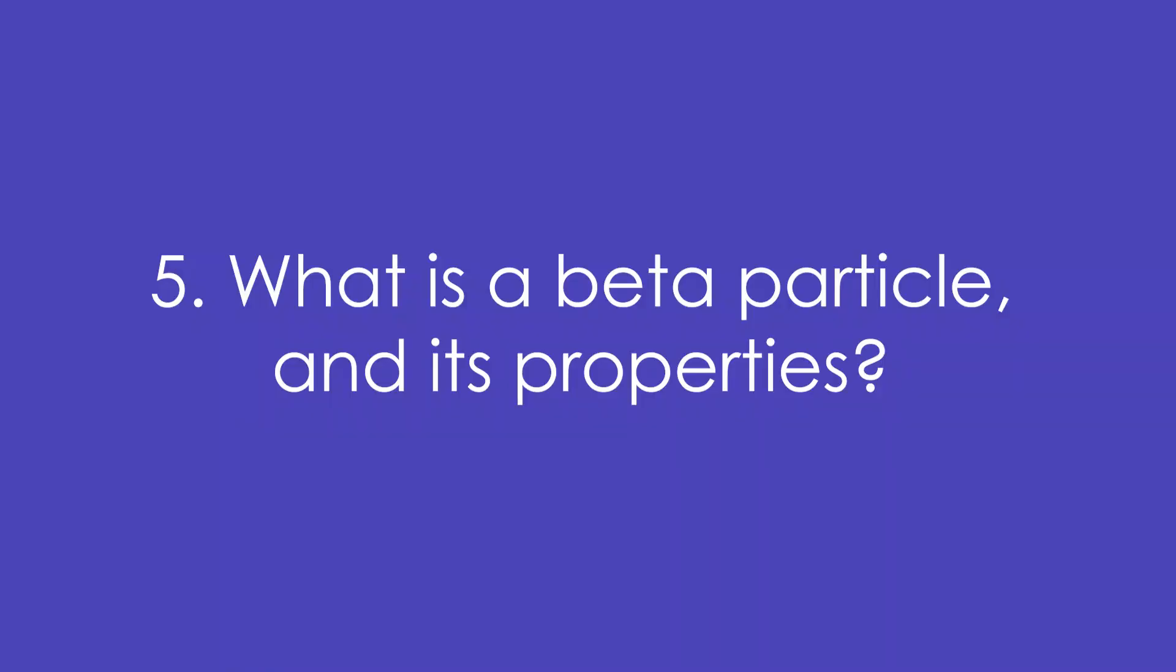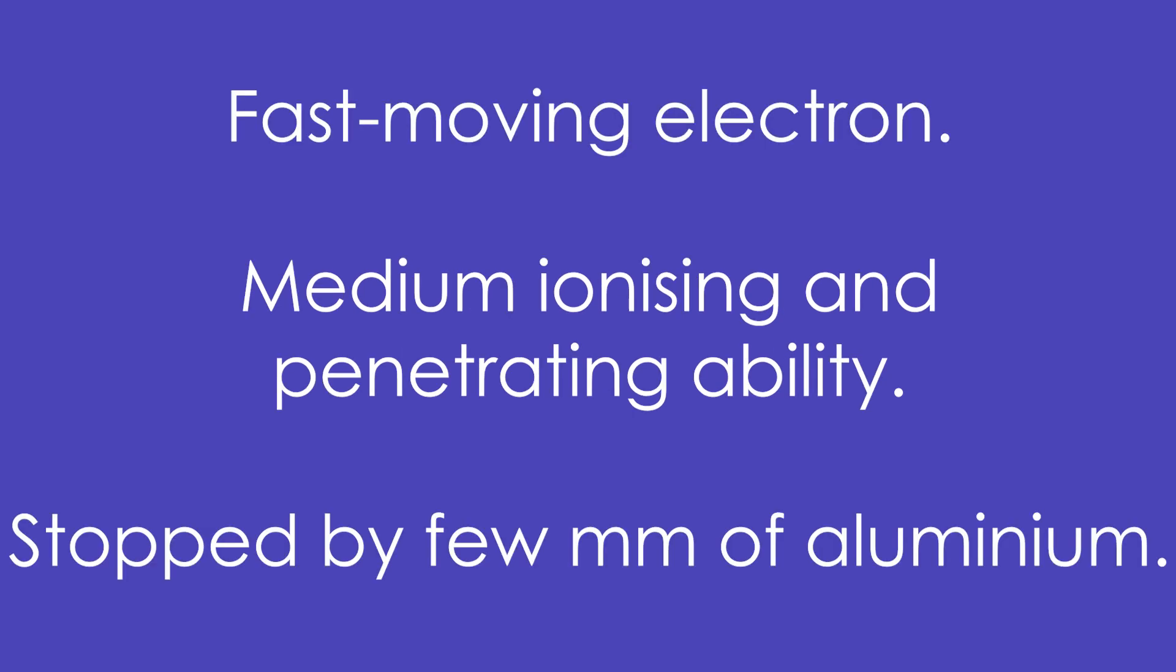5. What is a beta or beta particle, and its properties? It's a fast moving electron, it's got a medium ionising and penetrating ability, it's stopped by a few millimeters of aluminium.